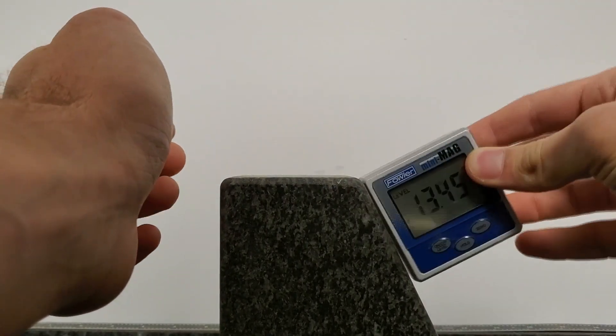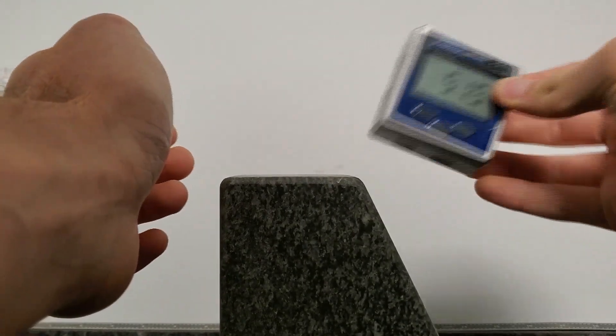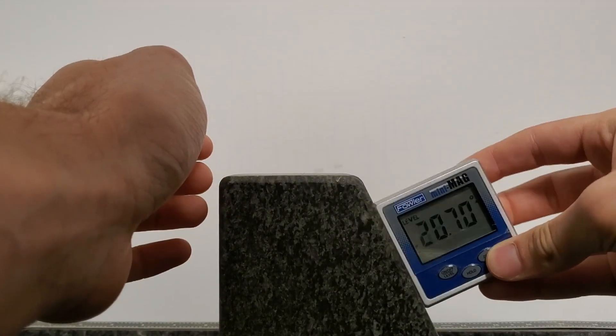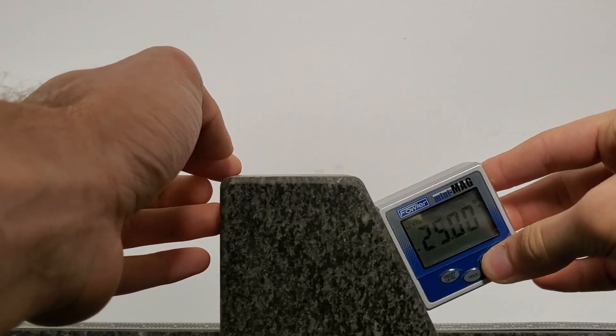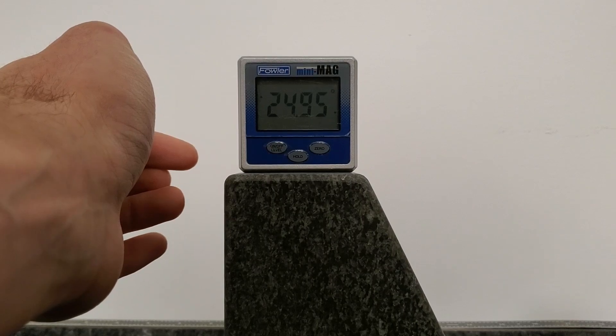You can take it, just place it on the angle you want, and it takes a reading. You can also zero it off of any surface to take the relative angle between those two lines.